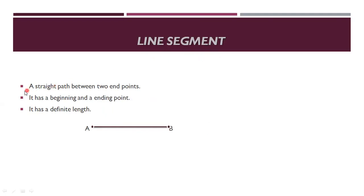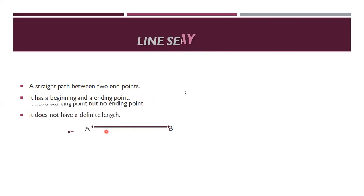Next, line segment. A straight path between two end points. It has a beginning and an ending point. It has a definite length. So a line segment has both a beginning and an ending, and it will have a fixed length also.